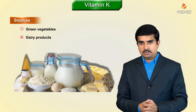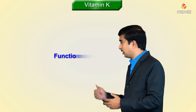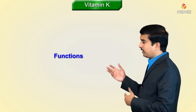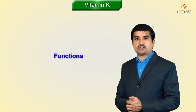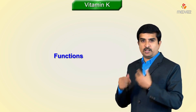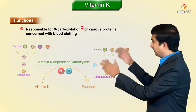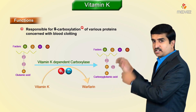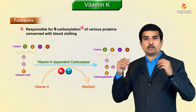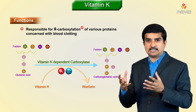Vitamin K is abundantly available in green leafy vegetables and dairy products. In terms of functions, vitamin K takes part in the coagulation process — it is required for gamma carboxylation of various proteins concerned with clotting.